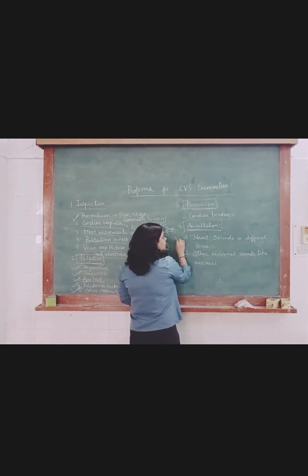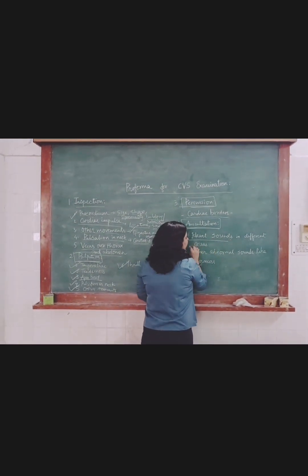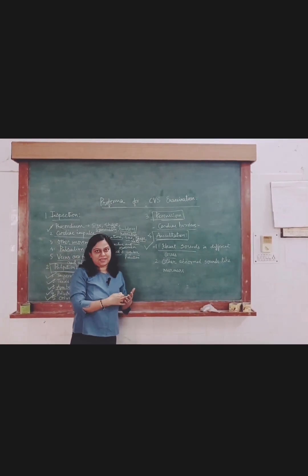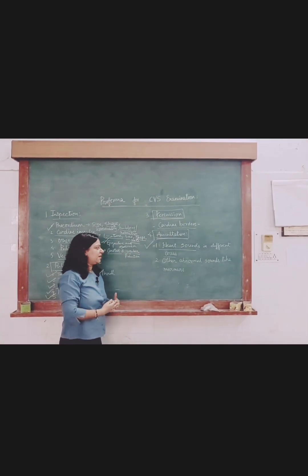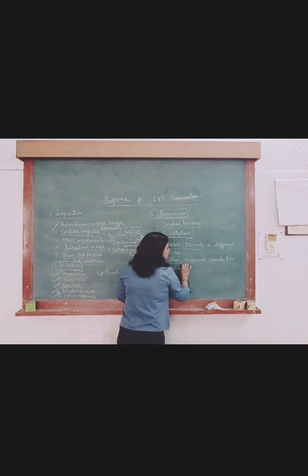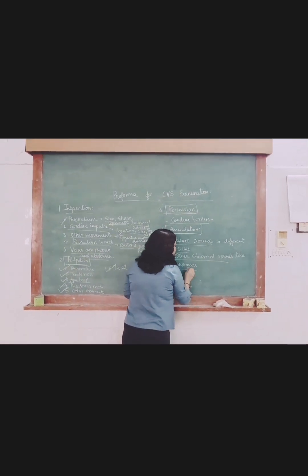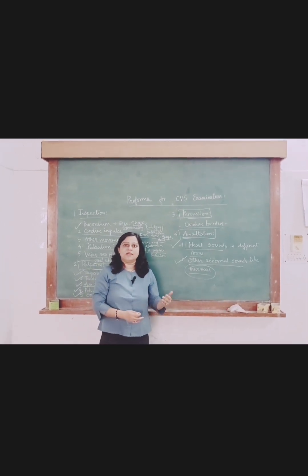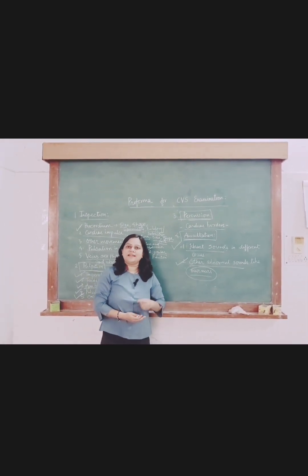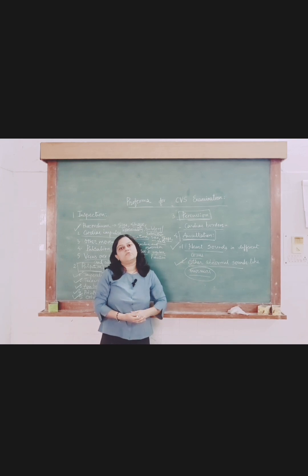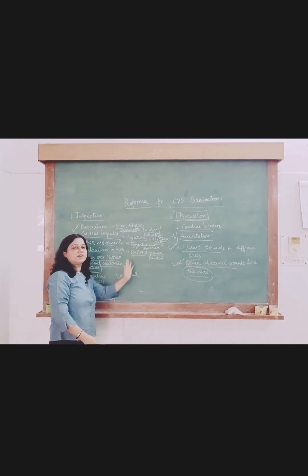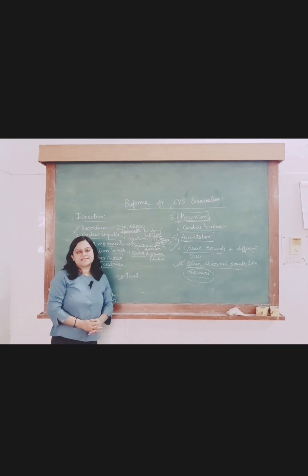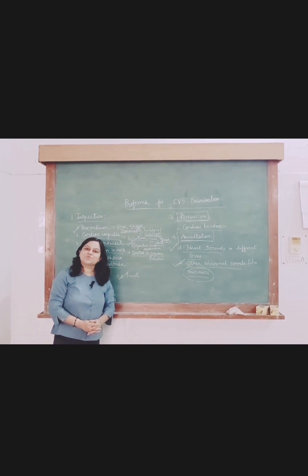Fourth is auscultation. Assess the chest for the presence of heart sounds in different areas such as the mitral area, pulmonary area, etc., and also assess for the presence of any abnormal sounds like murmur. If a murmur is present, auscultate it in detail and write down your findings. These are the important points to cover when doing a systemic examination for the cardiovascular system. Thank you so much.